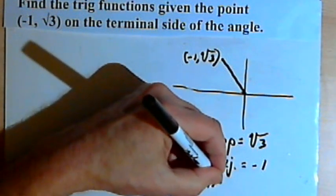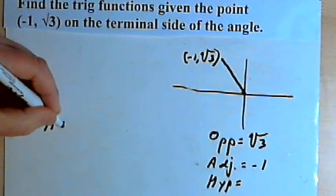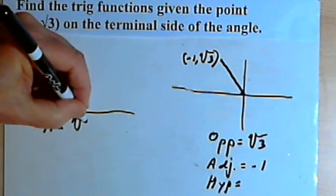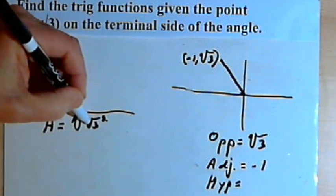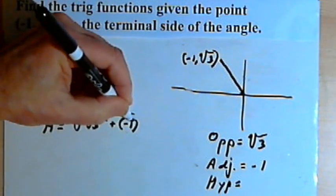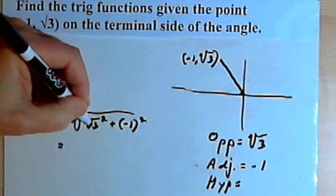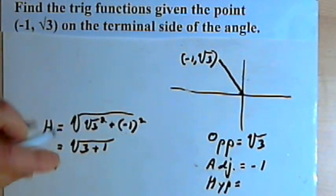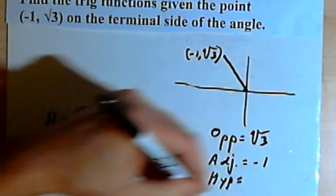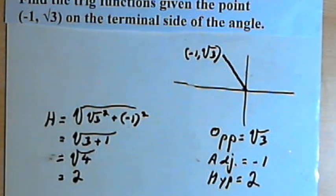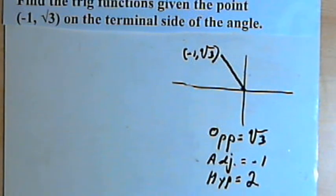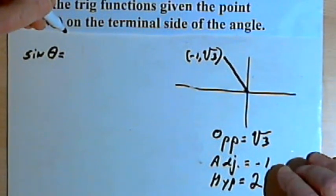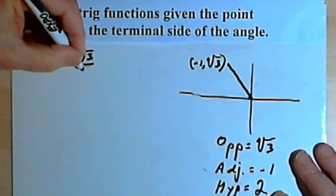Now we want to find the hypotenuse. To find the hypotenuse, we're going to take the square root of the opposite side squared plus the adjacent side squared. So we want the square root of (√3) squared plus (−1) squared. Well, (√3) squared is just 3, and (−1) squared is a positive 1. So now I've got the square root of 4, which just equals 2. So the hypotenuse has a length of 2. We've got our two sides and hypotenuse, and we can just fill in the values. So the sine — opposite over hypotenuse — is going to be the square root of 3 over 2.